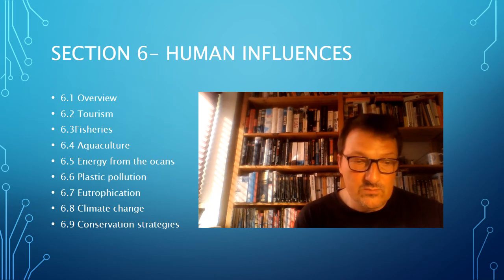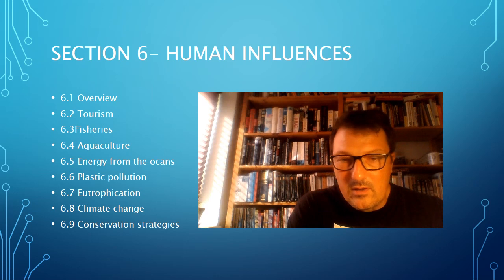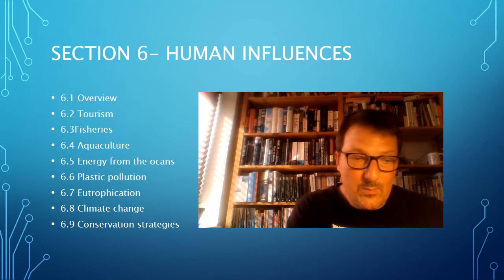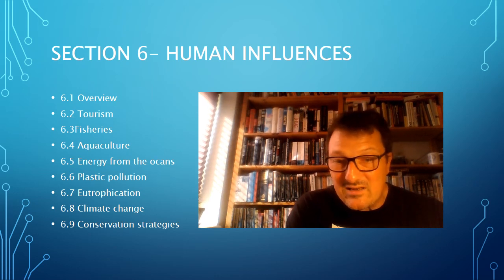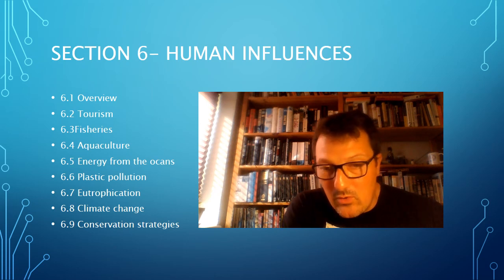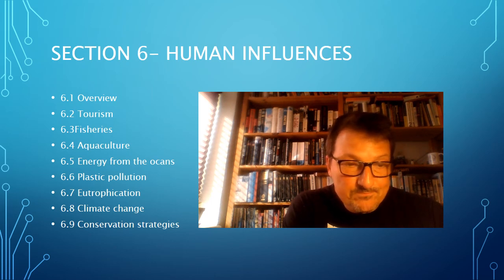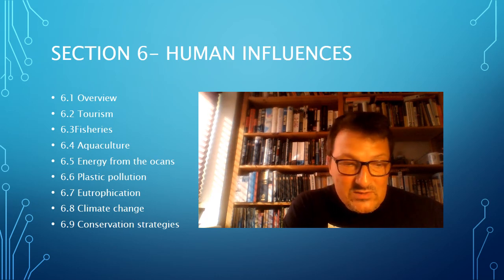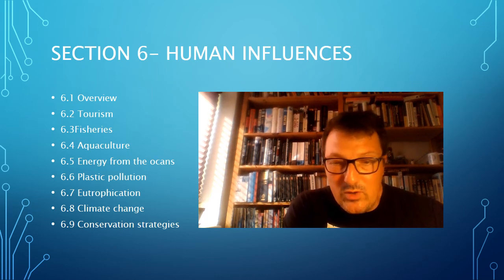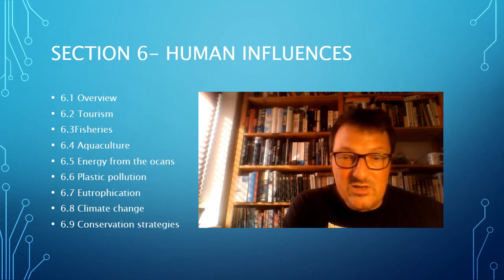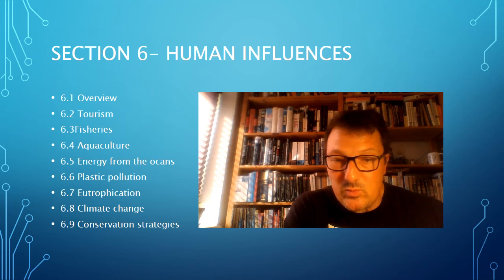6.6 looks at, unfortunately, the big problem of plastic pollution — how plastic moves in the ocean, the impact of microplastics on marine organisms and ecosystems, how ocean gyres lead to the formation of these huge plastic garbage patches, and evaluating strategies for how to limit this. 6.7 looks at eutrophication — how adding too many nutrients to water can cause algal blooms and all the different side effects we get from that.